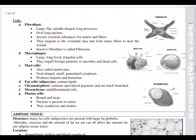Mast cells, also called mastocytes, are oval-shaped cells with granulated cytoplasm that are small in size. They produce two important substances: heparin and histamine. These also play a very important role in our immune system, which we will discuss further when covering immunity. Plasma cells have a round, large nucleus present in the center, and they synthesize antibodies — which is why they play a very important role.